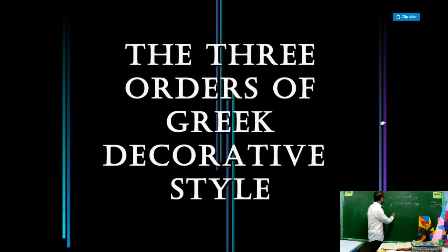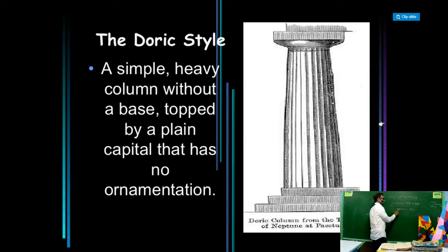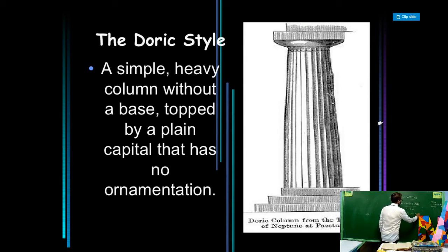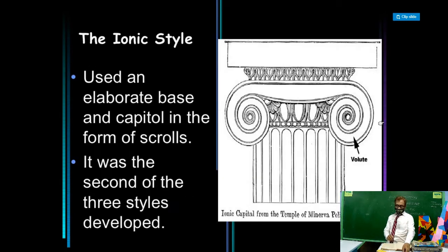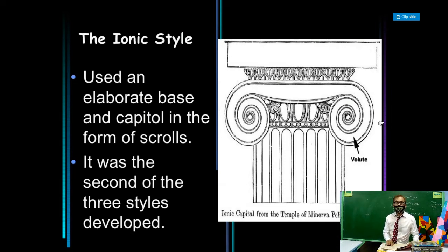The three orders of Greek decorative style: the first is the Doric style — a massive post or column, simple and heavy, without a base, topped by a plain capital with no ornamentation. The second is the Ionic style, which used an elaborate base and capital in the form of a scroll.